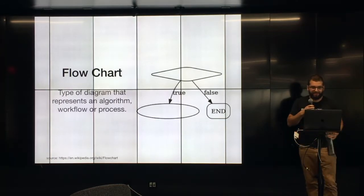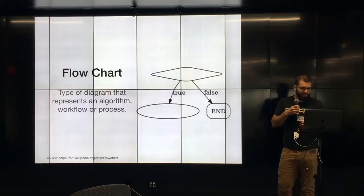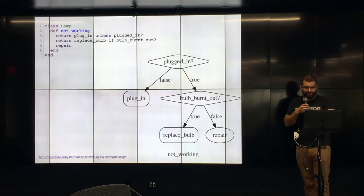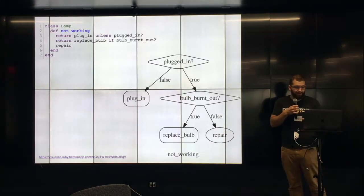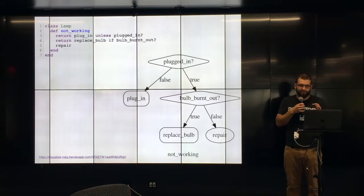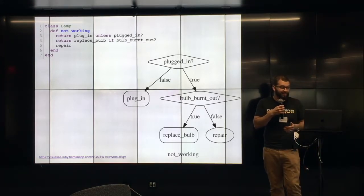Flowchart is just a type of diagram that represents an algorithm or workflow. So here this just represents a decision and a true or false action. Here's some code, and it can produce that flowchart. So those things are equivalent. The goal of this gem is you don't really have to change your code. You shouldn't have to change it at all to produce something that looks somewhat visually appealing and helps you visualize control flow.